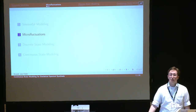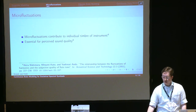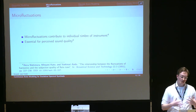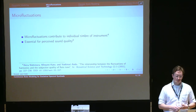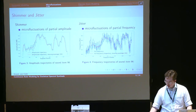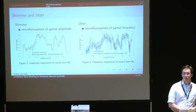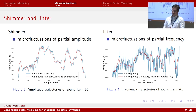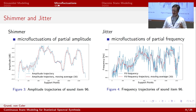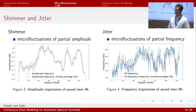An important question is: why do we need to model these micro-fluctuations? There is a lot of evidence that suggests these fluctuations contribute to the individual timbre of an instrument, besides the spectral envelope, and are essential for the perceived sound quality of synthesis results. The terms shimmer and jitter are used to define amplitude and frequency fluctuations respectively — shimmer describing amplitude fluctuations and jitter the frequency fluctuations. They are acoustic characteristics used frequently in speech processing, and here they refer to amplitude and frequency perturbations in partials.